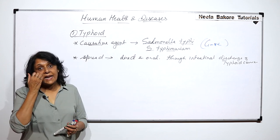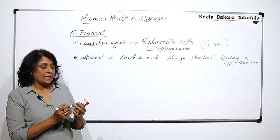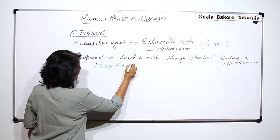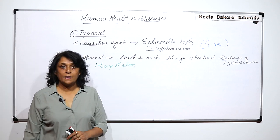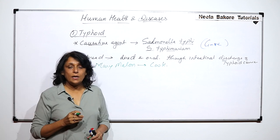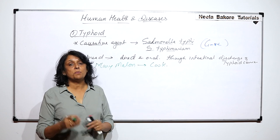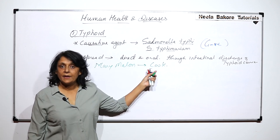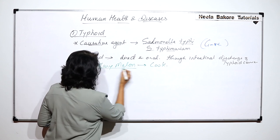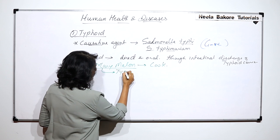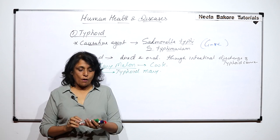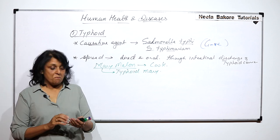There is a very interesting case related to this spread. There was a lady named Mary Mallon, and she was a cook by profession. Because she was a cook, she was actually responsible for spreading this disease among the people who would eat the food cooked by her. This continued for many years, and because of this, Mary Mallon has been named Typhoid Mary — a classic example of a person responsible for spreading typhoid for many years.